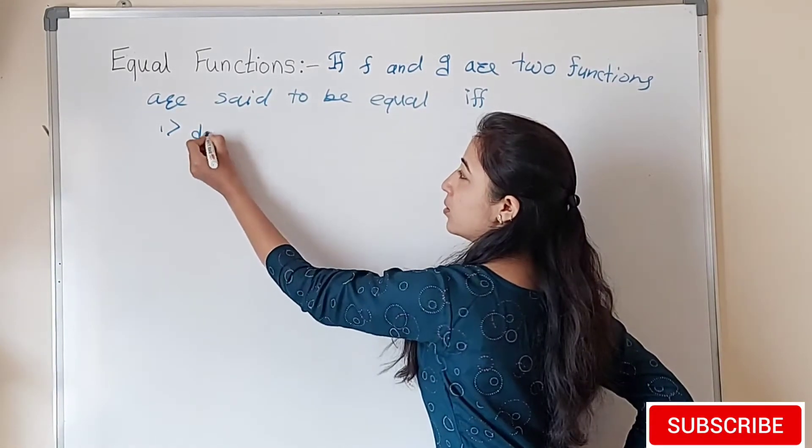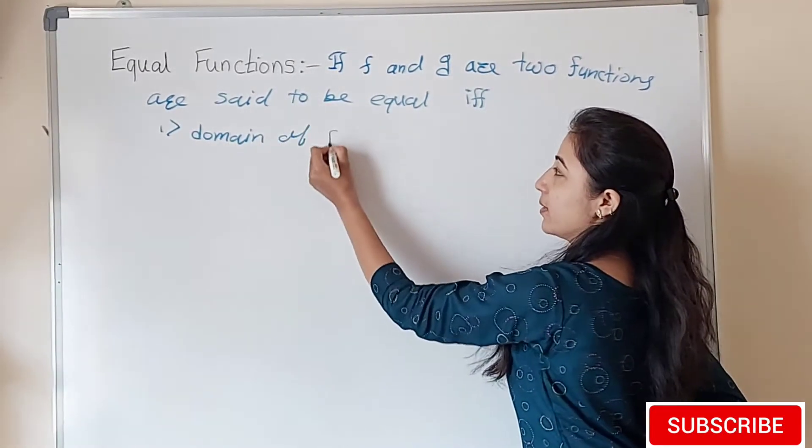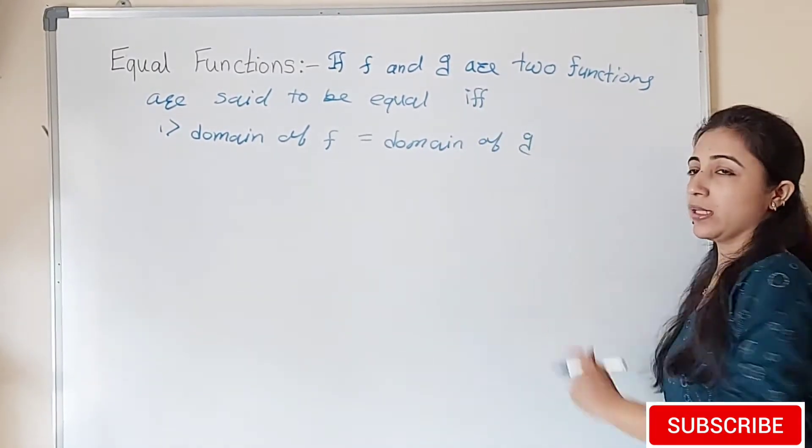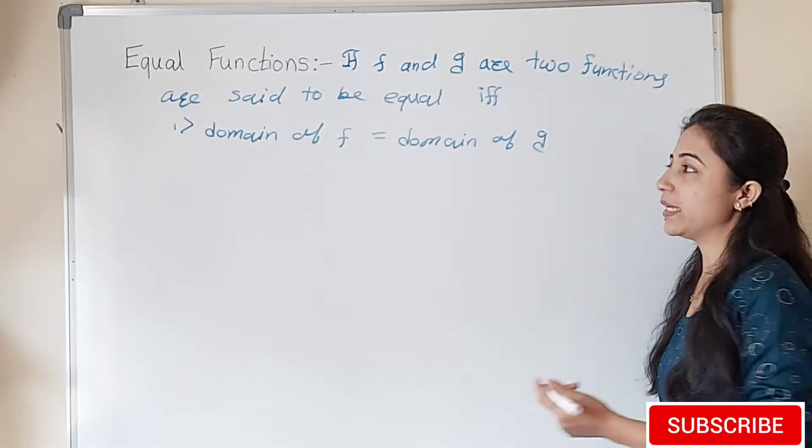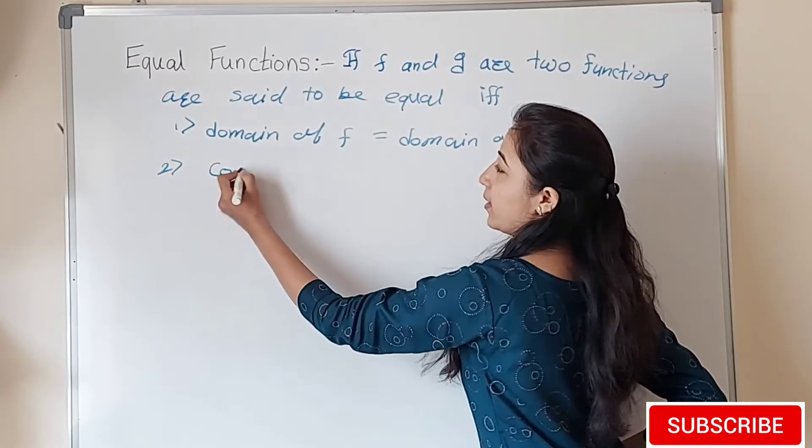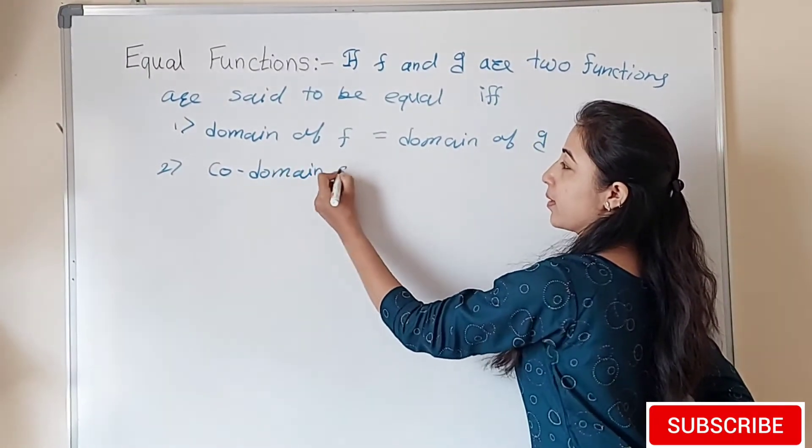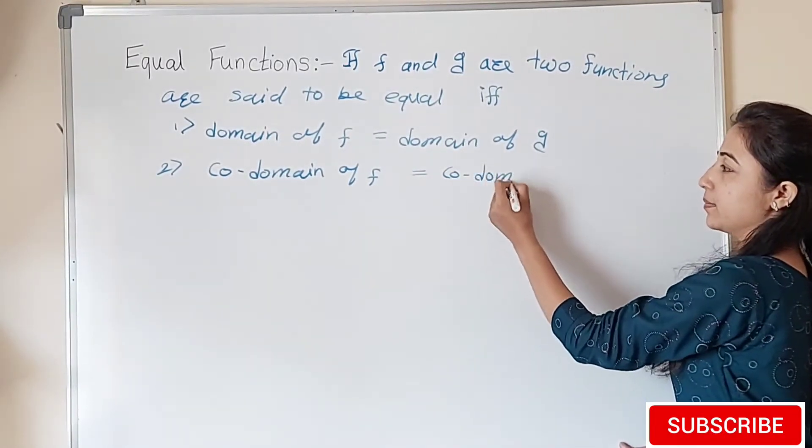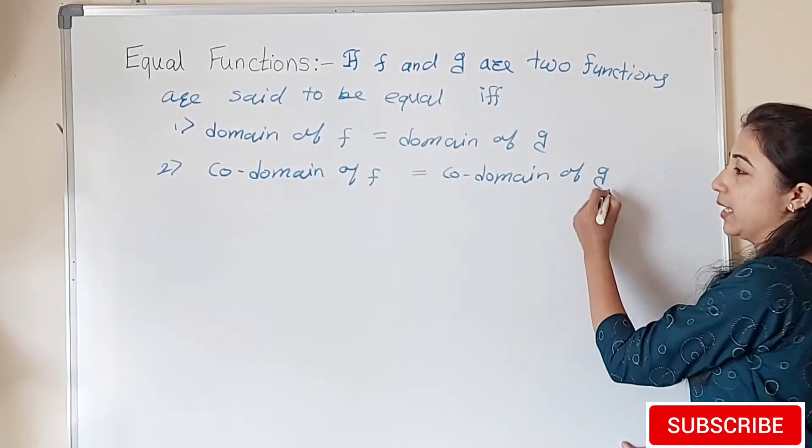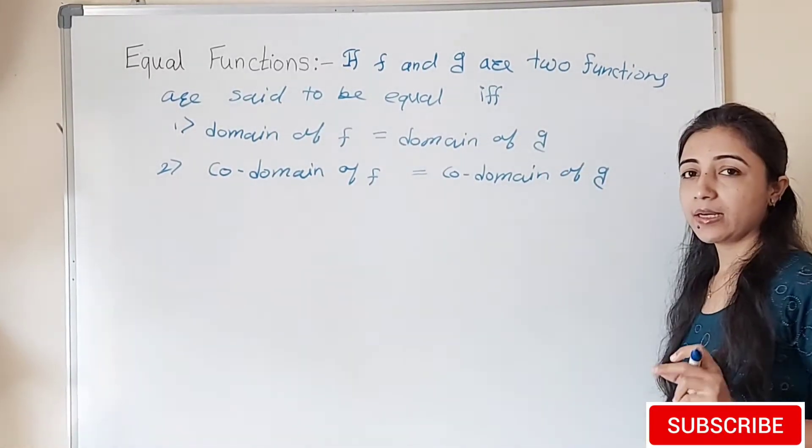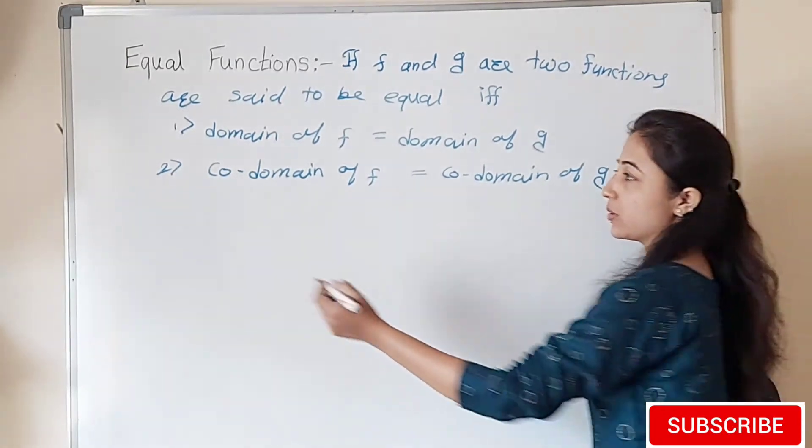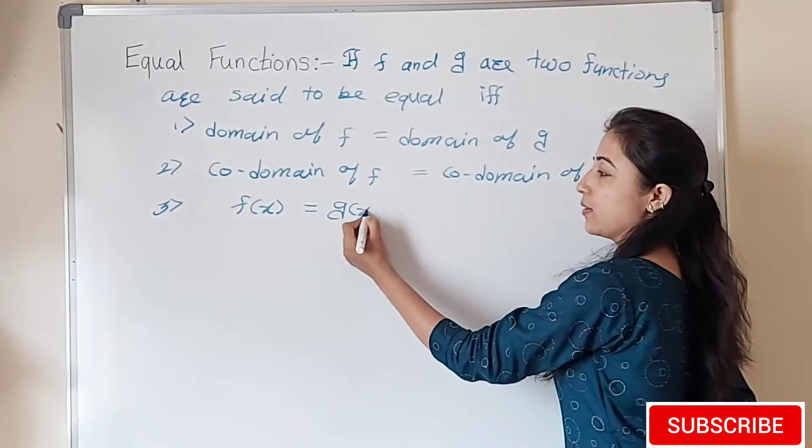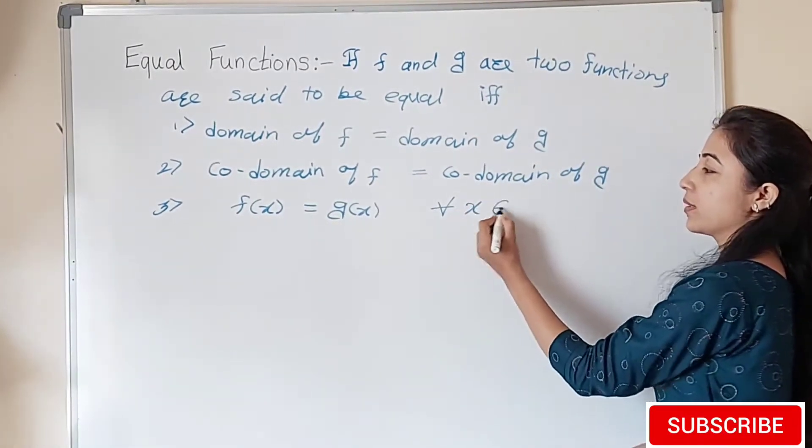Second is the codomain of f equals codomain of g. And third and important condition is corresponding images must be equal. So here the third point is f(x) equals g(x) for all x belonging to d.